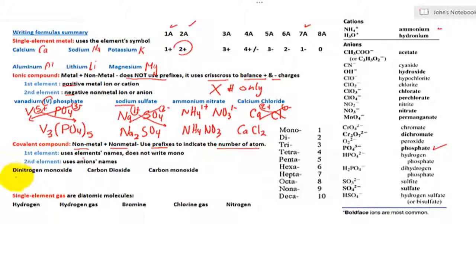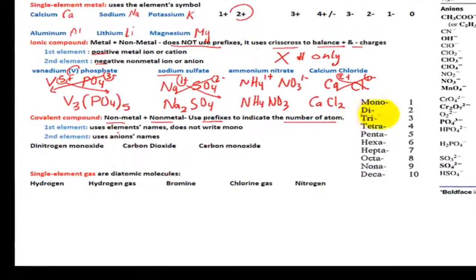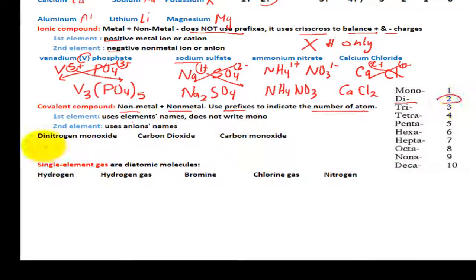Here we have dinitrogen monoxide. And here's our prefix. The prefix di represented are 2, so we have N2.